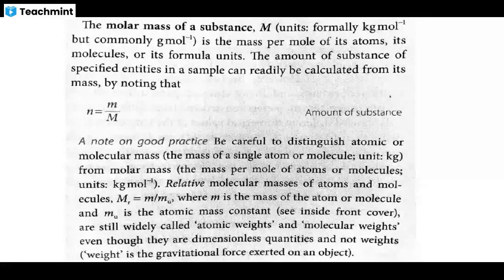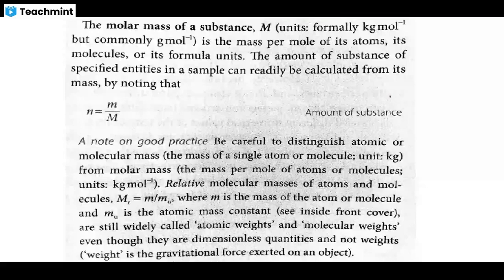Molar mass is the mass of one mole of a substance. If you take one mole of carbon, its molar mass is 12 grams per mole — the unit is grams per mole, which is different from mass. Mass is in kg or grams; molar mass is mass per mole. Moles equals mass divided by molar mass. For example, 12 grams of carbon divided by 12 g/mol gives 1 mole; 24 grams gives 2 moles.